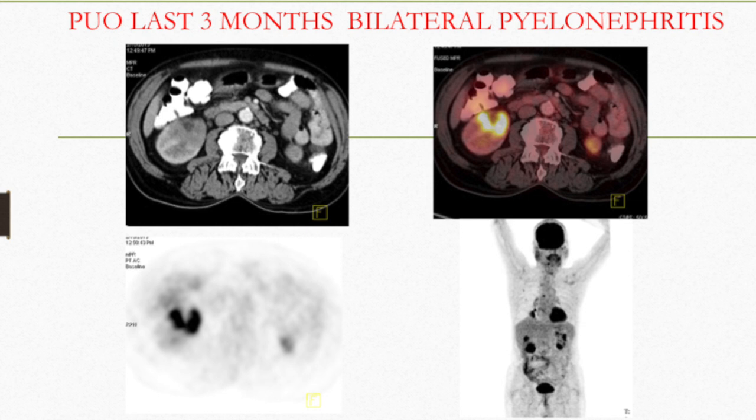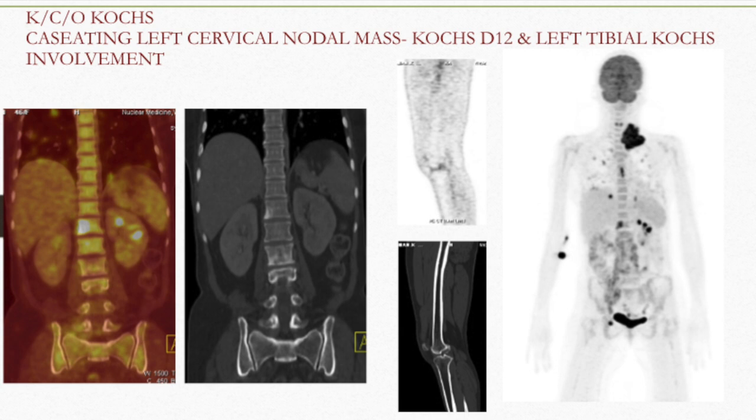In the lower pole of the left kidney there is also a focal area of uptake, making it a case of bilateral pyelonephritis. This was a known case of tuberculosis showing a caseating left cervical nodal mass. The patient also had knee pain and back pain, so PET was done which showed D12 vertebral body with patchy sclerosis, a subtle soft tissue component, and minimal uptake in the knee joint secondary to synovial thickening — confirming cervical nodal tuberculosis with D12 vertebral and knee joint involvement.